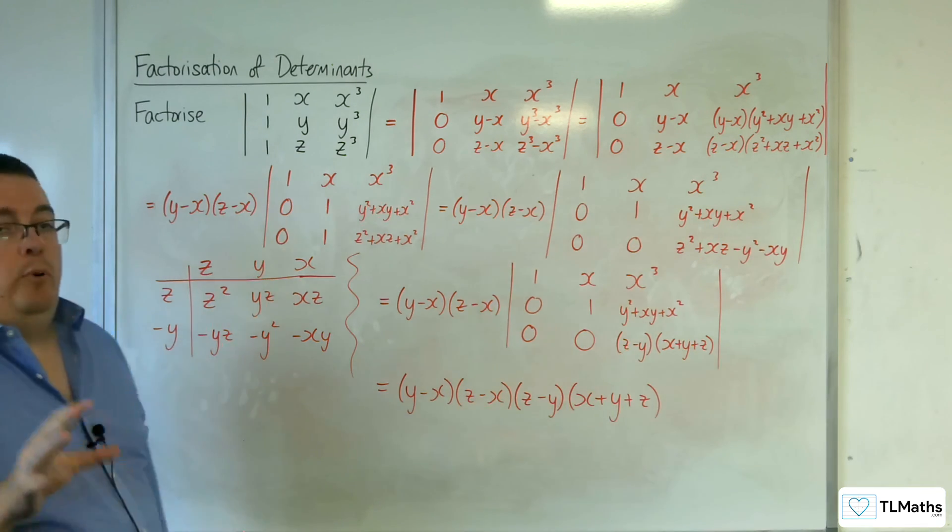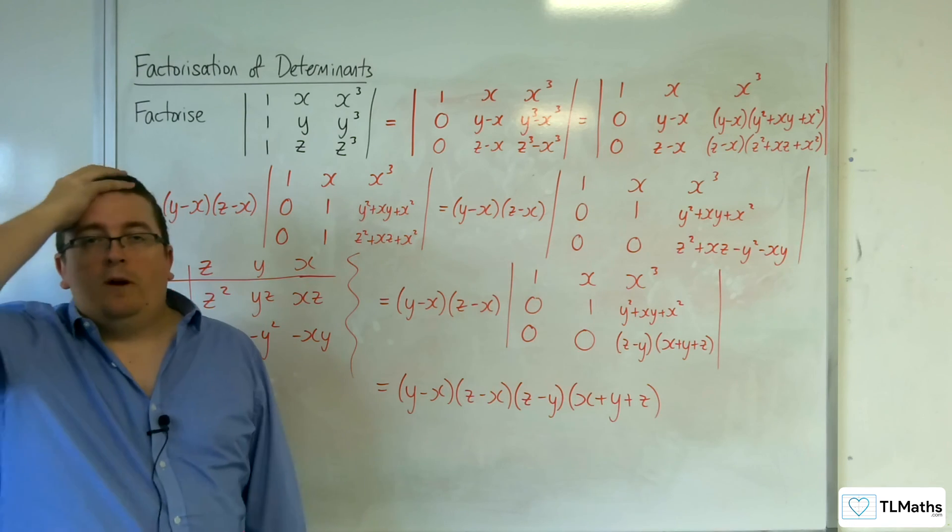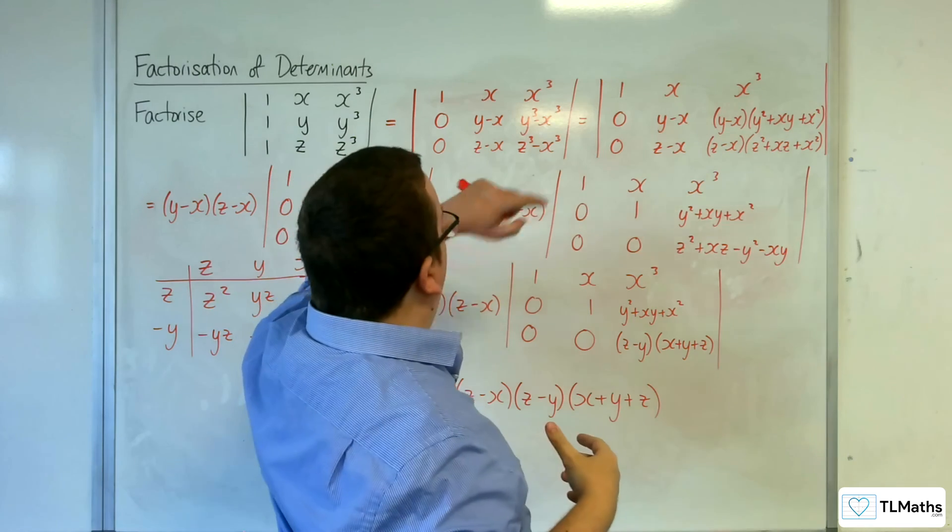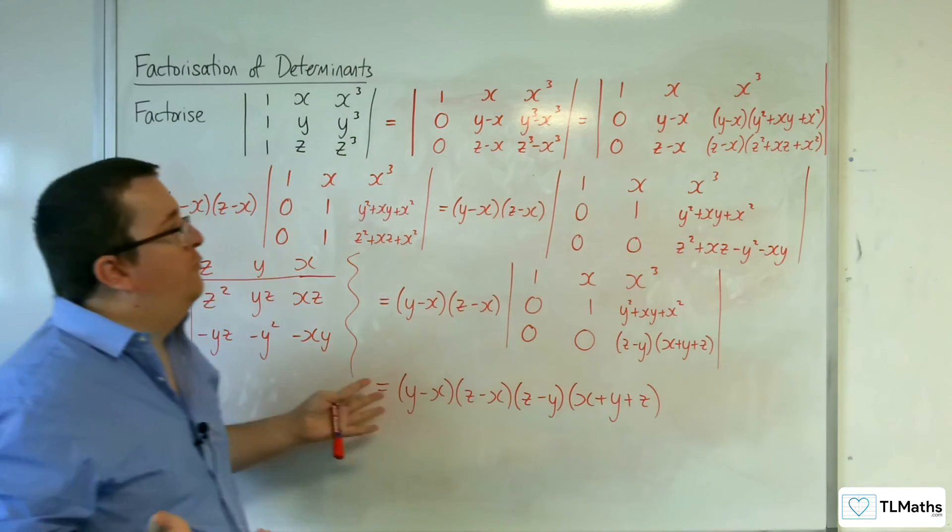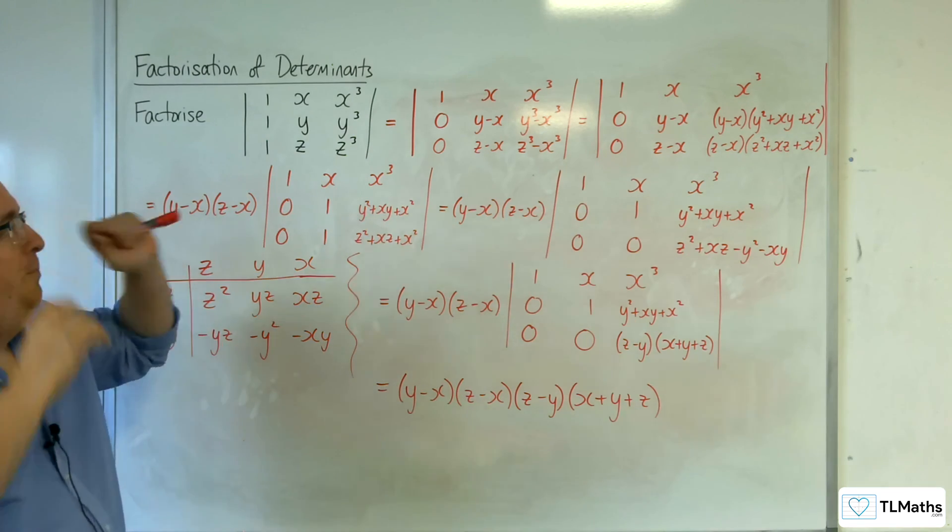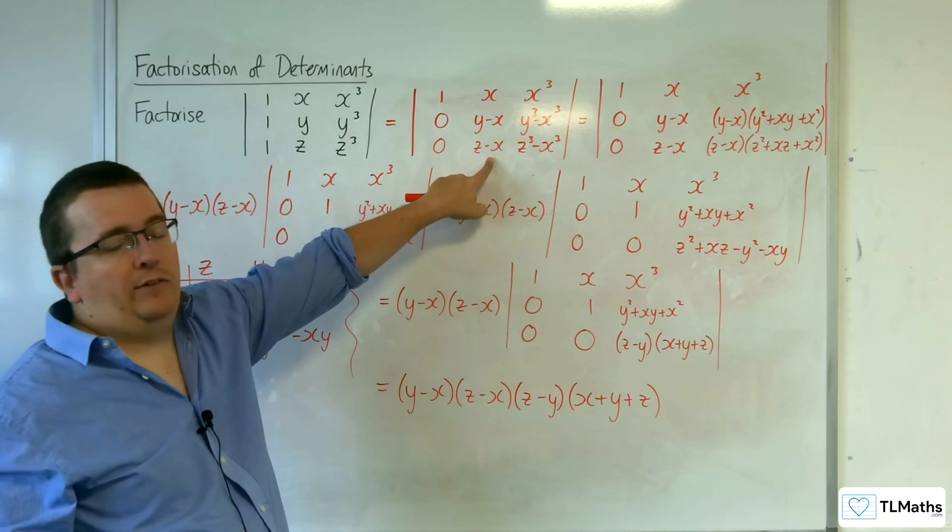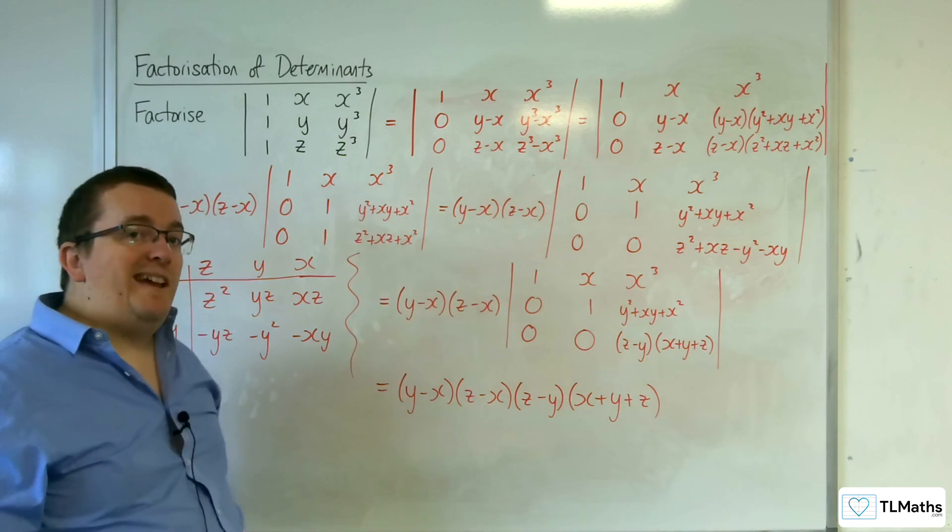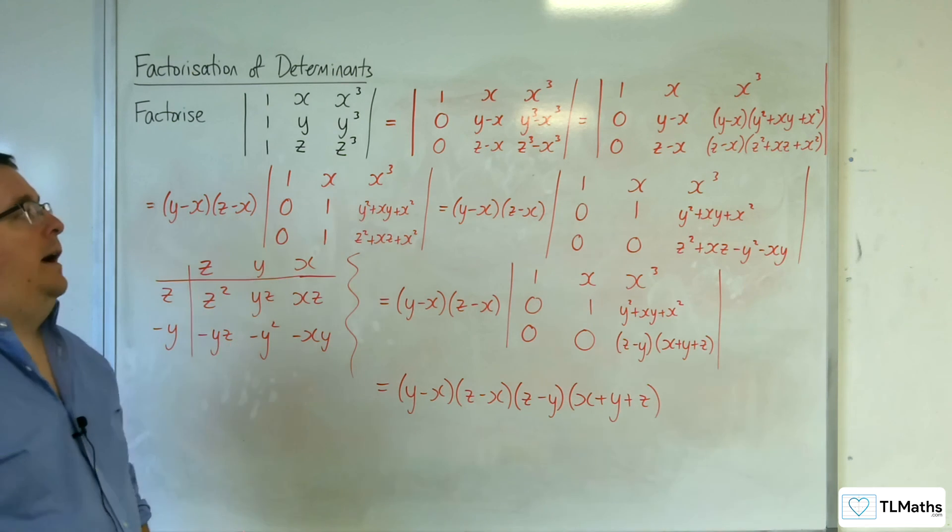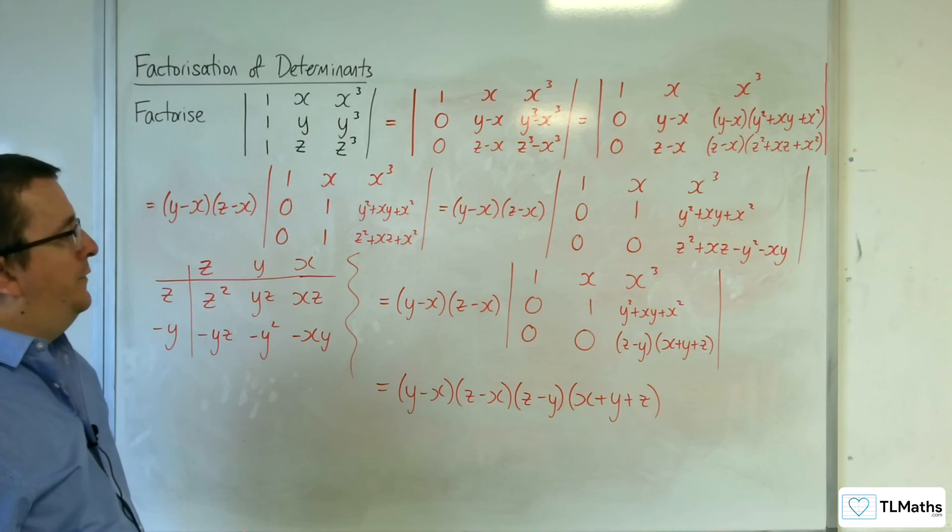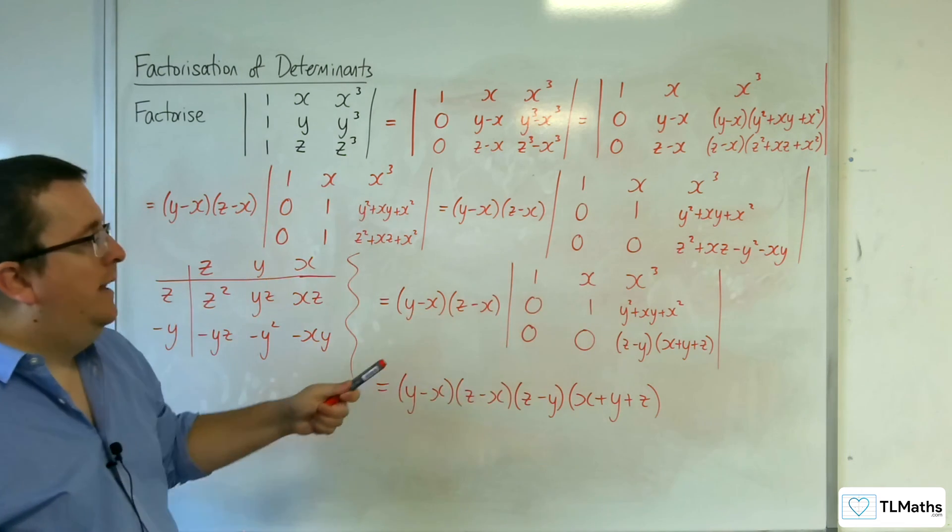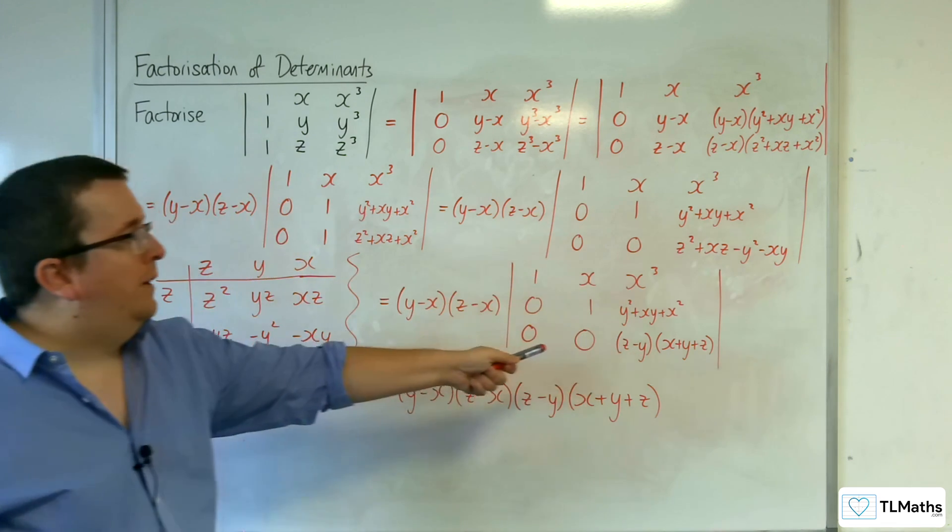So, there are some points in here where you might be going, well, how am I going to factorize this z cubed take away x cubed? For example, you've got to spot that maybe the z take away x is going to be a factor. And then you can utilize some polynomial division to help you find what the other factor is. And the same down here. It's really spotting, or maybe this can be factorized.